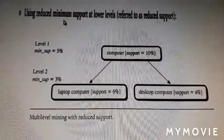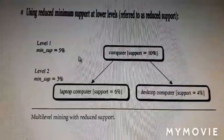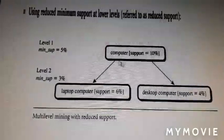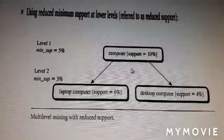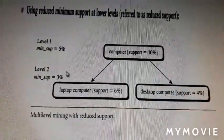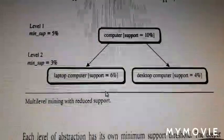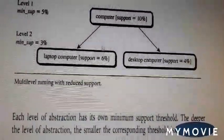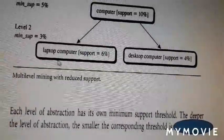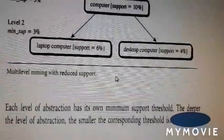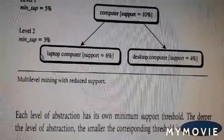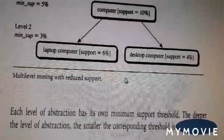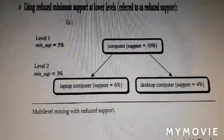The second approach is known as reduced minimum support. Here we look at the difference between the minimum support at two levels. At the top level, five percent may be appropriate for the Computer level, but as we go deeper, we change it — for example, to three percent at the next level. As the level changes, associative rules also change, and it is better to decrease the minimum support count as we go deeper. This way, proper and efficient associative rules are generated.